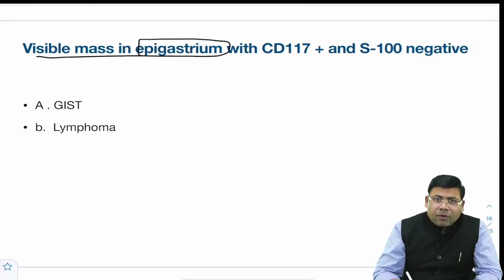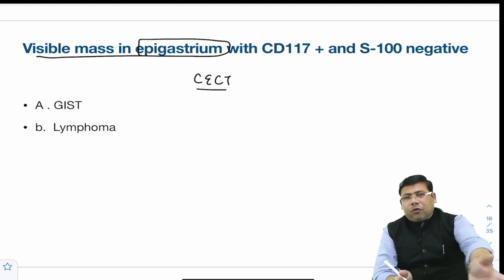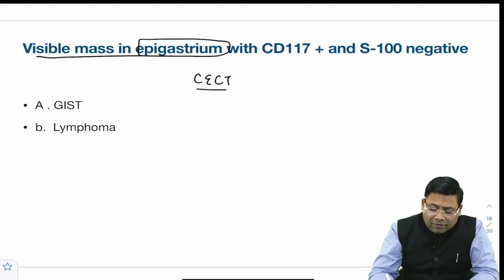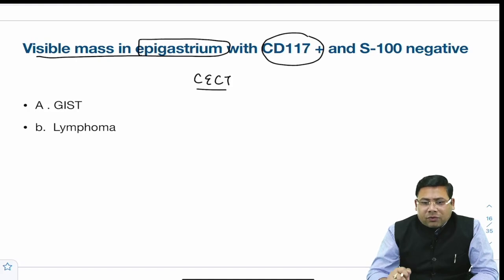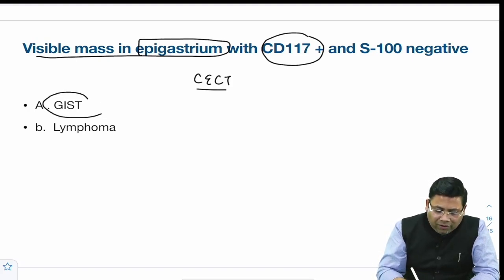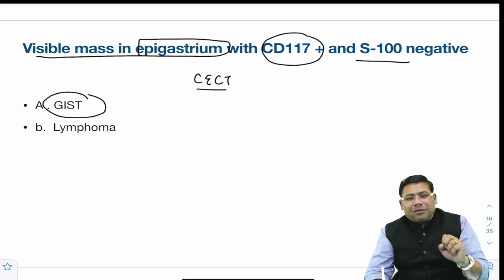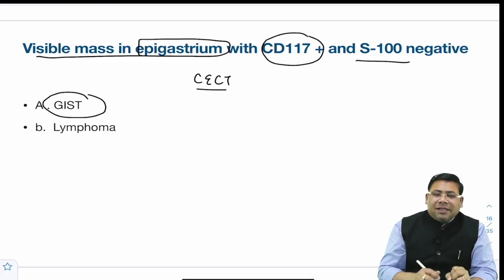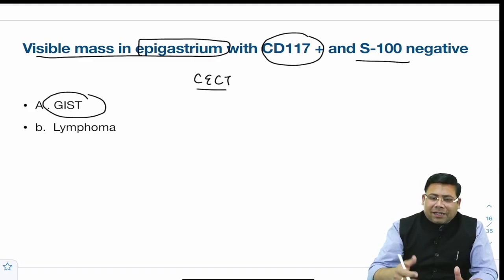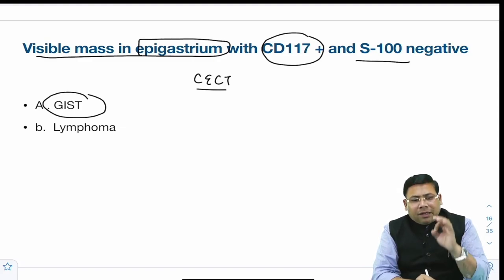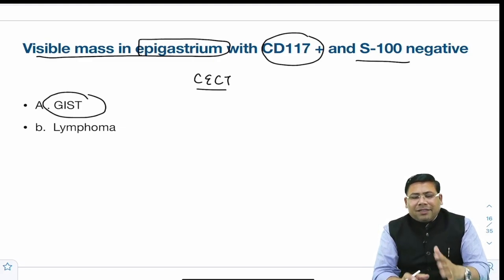There was a question on a visible mass in the epigastric region with CD117 positive marker. CD117 is a very strong marker for GIST. Lymphomas are positive for S100 but not CD117. This is a gastric GIST — gastrointestinal stromal tumor — and the stomach is the most common site. GISTs are smooth muscle tumors arising from the interstitial cells of Cajal, though they are not exactly smooth muscle tumors.